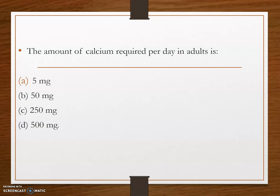Next question: the amount of calcium required per day in adults is — option A, 5 milligram; option B, 50 milligram; option C, 250 milligram; and option D, 500 milligram. The answer is option D, 500 milligram. The amount of calcium required per day in adults is 500 milligrams.